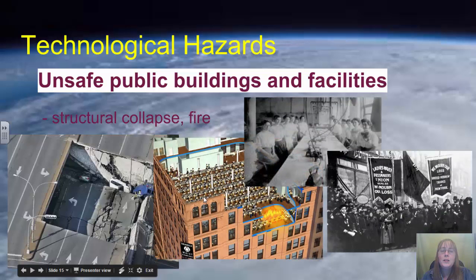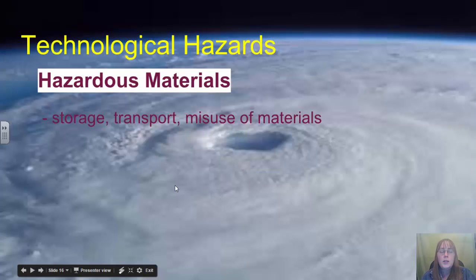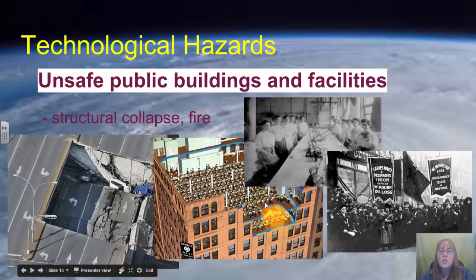We also have the issue of buildings being poorly designed so occupants cannot escape in a fire. The classic example is the Triangle Shirtwaist fire just before World War I, where a fire broke out in a shirt-making factory and the women working there could not get out — those who tried to escape jumped through windows to their deaths. Because of this disaster where hundreds of garment workers were killed, many laws were changed requiring fire escapes and eventually sprinkler systems in buildings.